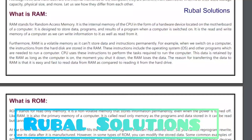The moment you shut it down, the RAM loses the data. The reason for transferring the data to the RAM is that it is easy and fast to read data from RAM as compared to reading it from a hard drive.